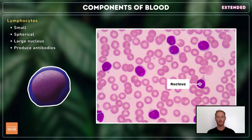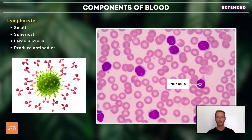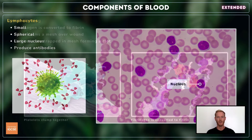Lymphocytes are much smaller white cells with a large spherical nucleus. One of the main functions of lymphocytes is to produce antibodies, which bind to pathogens and destroy them, or mark them for destruction by phagocytes.